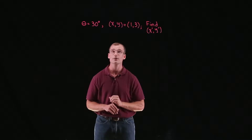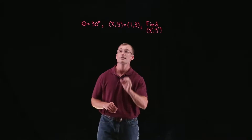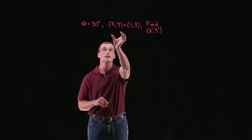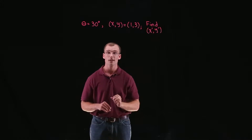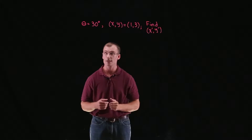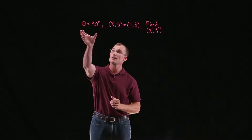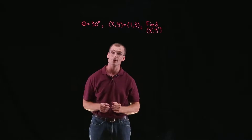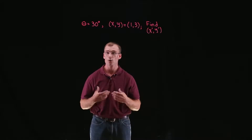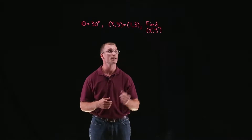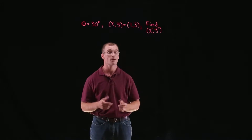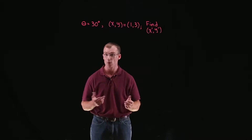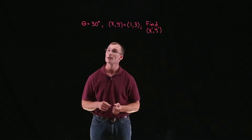What we want to do here is consider our point xy equal to 1, 3 and rotating the xy plane theta equal to 30 degrees — what would be our corresponding point in the x prime y prime plane, namely the point x prime y prime?